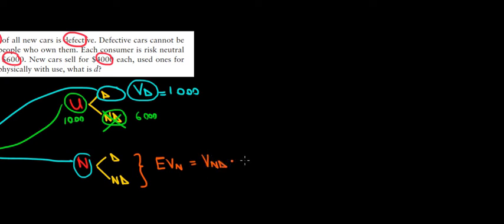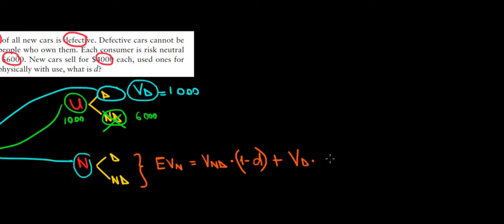The expected value of a new car equals the value of a non-defective car times the probability of that outcome. Since the proportion of defective cars is D, the proportion of non-defective cars is one minus D. We add to that the value of a defective car times the proportion of defective cars, which is D.